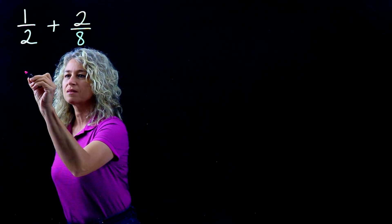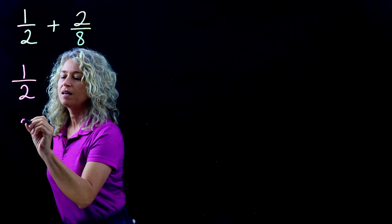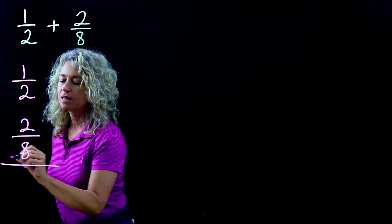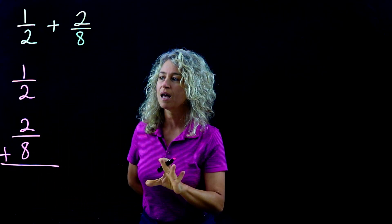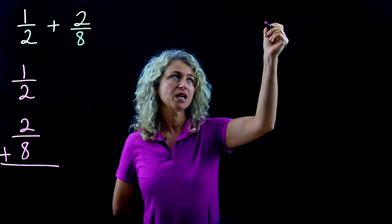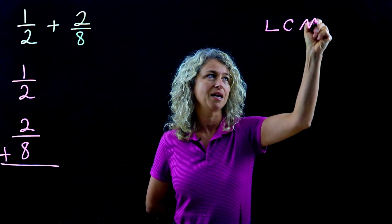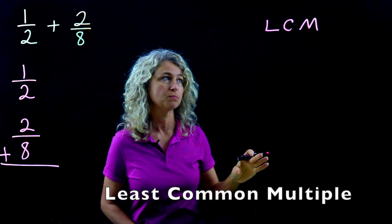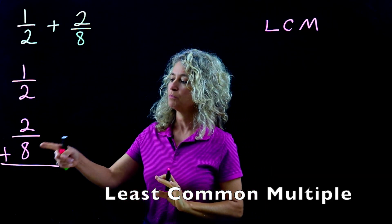First thing, let's rewrite the problem — 1/2 and 2/8 — vertically. You'll see why I like this method so well in a moment. We're going to come over here and find the LCM, which stands for least common multiple.